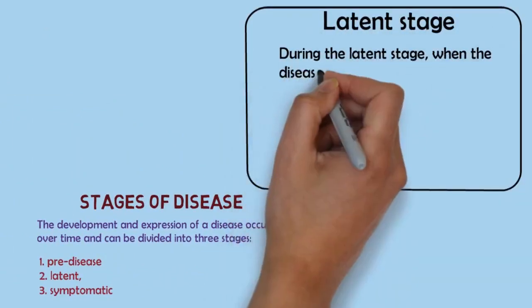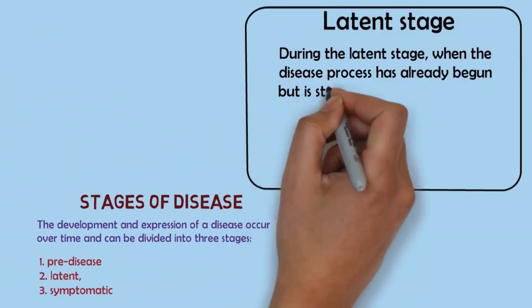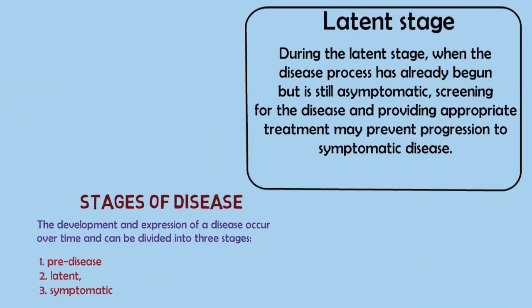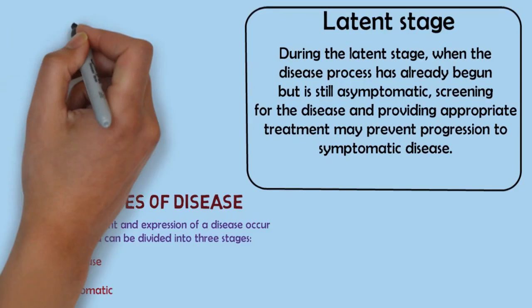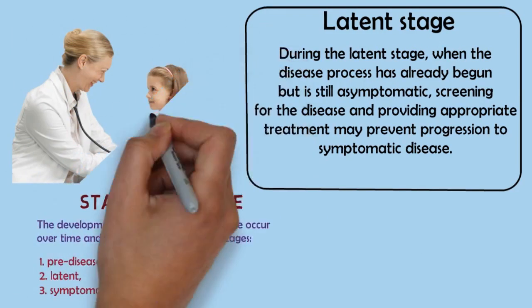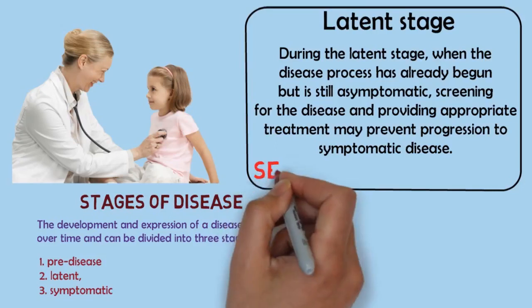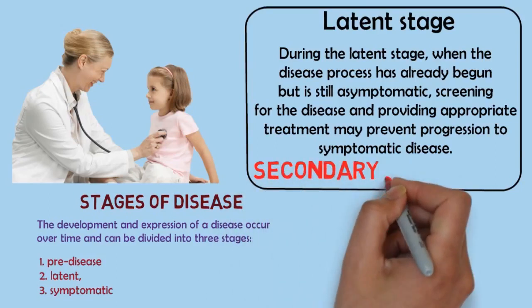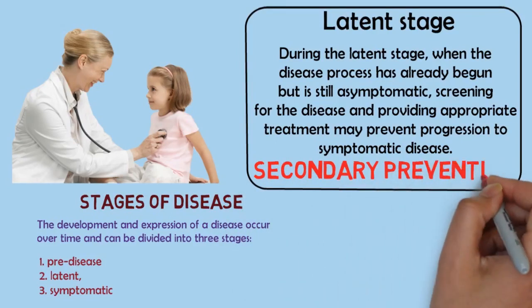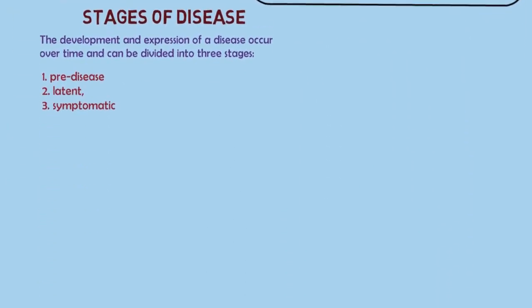During the latent stage, when the disease process has already begun but is still asymptomatic, screening for the disease and providing appropriate treatment may prevent progression to symptomatic disease. This is called secondary prevention.